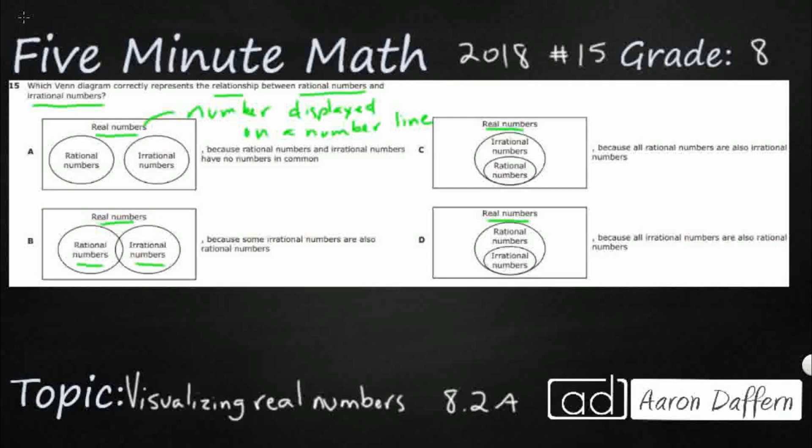So if you look at A, you see there's no interaction, there's no overlap at all. B has got just a little bit of overlap between the rational and the irrational. C and D both have one completely within the other, just depending on if you want the irrational on the outside or the rational on the outside. So now let's get to it. Let's take a look at our rational numbers.